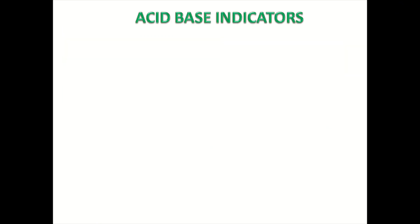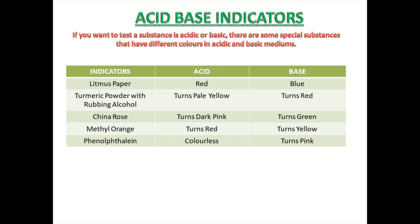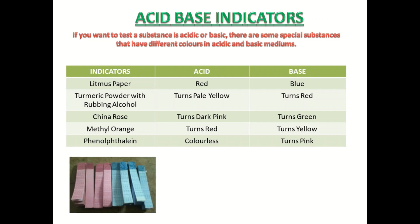So students, you have learned about acids as well as bases. Now we will learn about acid-base indicators. If you want to test a substance — is it acidic or basic? — there are some special substances called acid-base indicators which have different colors in acidic and basic mediums. Here you can see the table. I have shown you five indicators which turn different colors in acidic as well as basic solutions. You can see the litmus paper — red and blue color litmus paper.